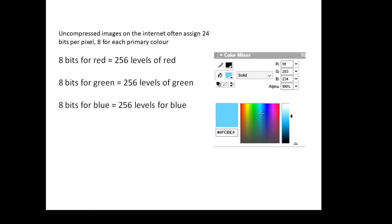Uncompressed images on the internet often have 24 bits per pixel—eight for each primary color. So there's eight bits for red, eight bits for green, eight bits for blue. That gives you 256 levels of each primary color, and with that you can make just about any color you desire. This lovely shade of blue is red 111, green 203, blue 234.